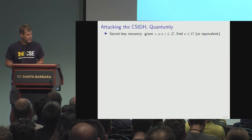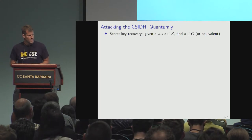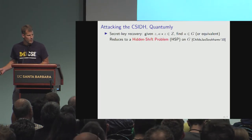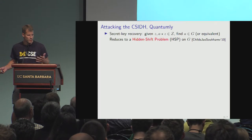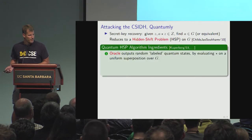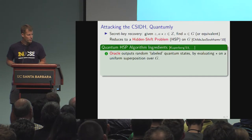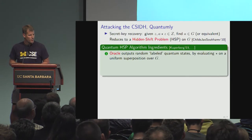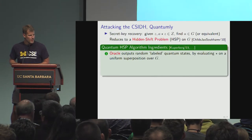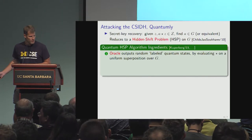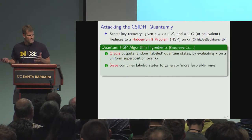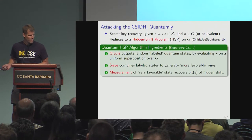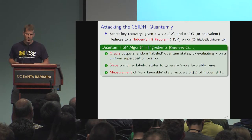The main way that people have considered attacking Seaside quantumly is to do Seaside key recovery — that is, given the public key, find the secret key or equivalent. It was shown in 2010 that this actually reduces to a hidden shift problem on the group, and in fact that problem had been considered all the way back in 2003 by Childs, Jao, and Soukharev. There are three main ingredients to the algorithms: first, an oracle that outputs random labeled quantum states by evaluating the action on the uniform superposition; then a sieve algorithm which combines these labeled states to generate more favorable states; and once the states become very favorable, you apply some measurement to recover information about the hidden shift.